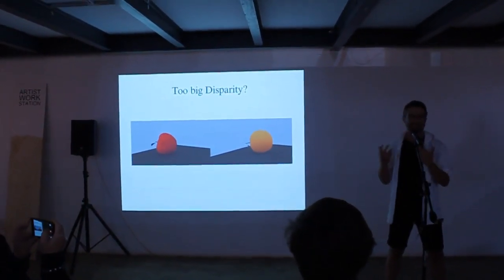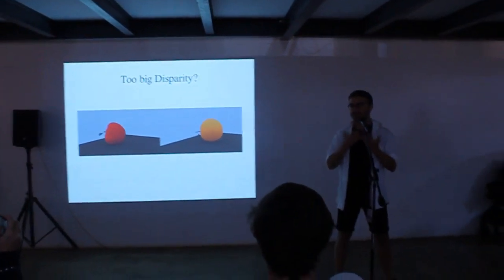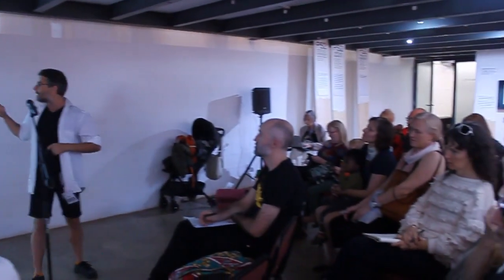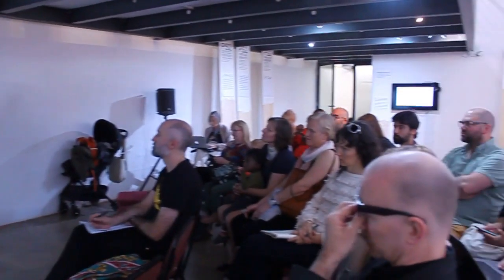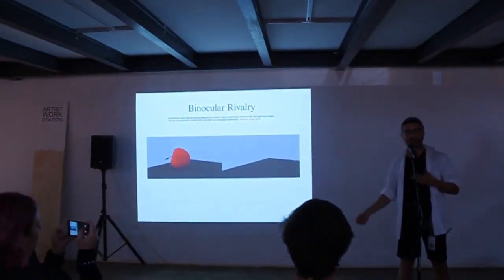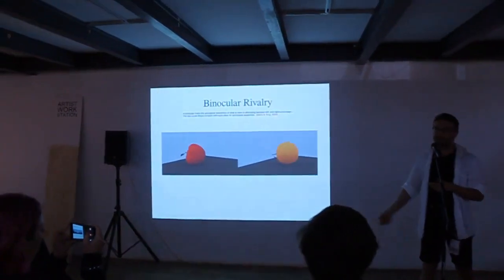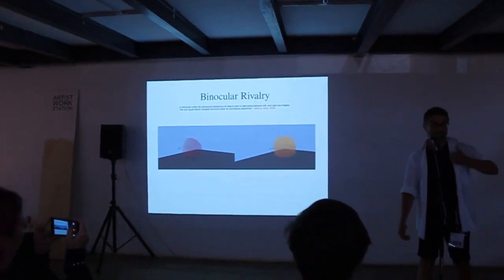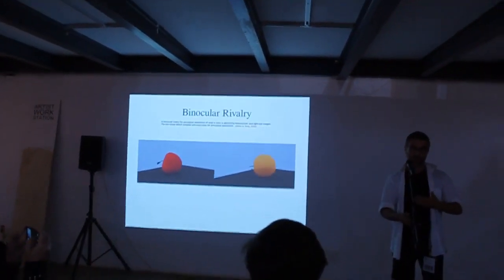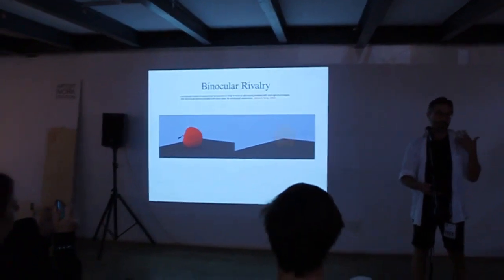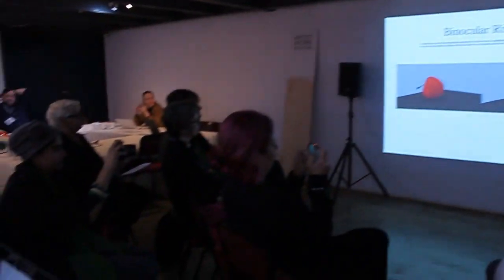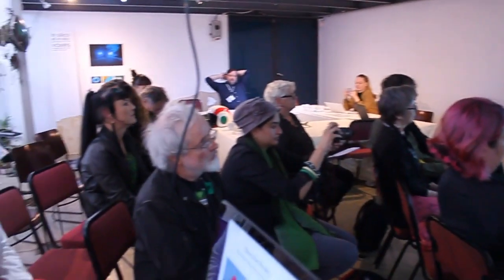And if this balance is in a specific way, then the so-called binocular rivalry occurs, where we see the left and right images in turn — two seconds one and three seconds the other, depending on the dominant characters of the image.